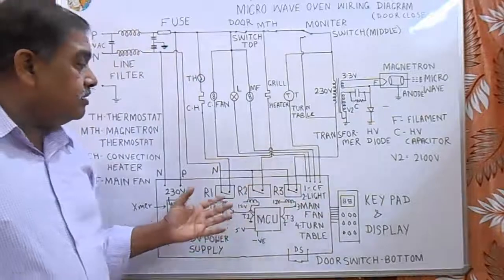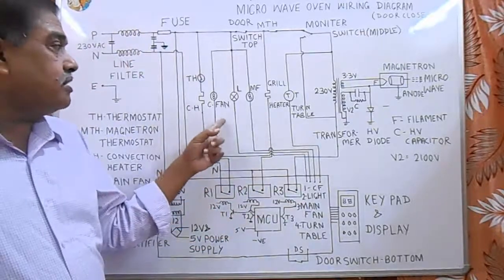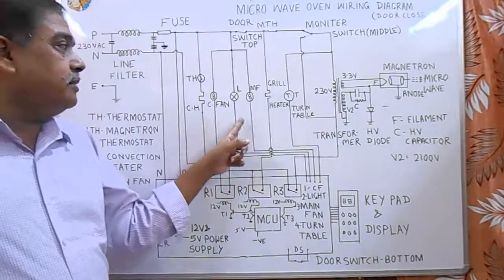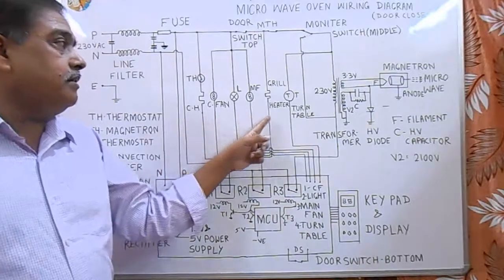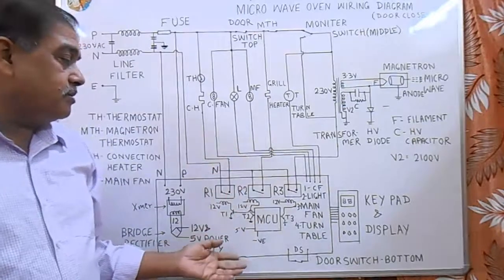So the convection fan, light, main fan, and turntable are controlled by the main PCB. So this is the heart of the system.